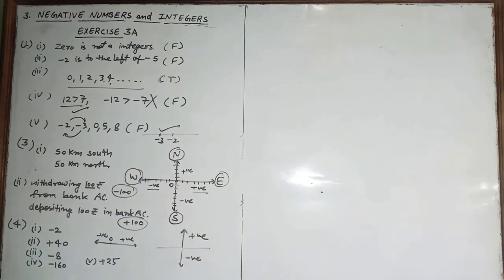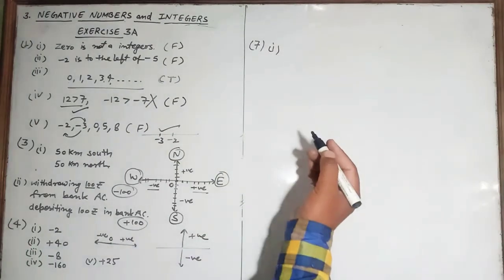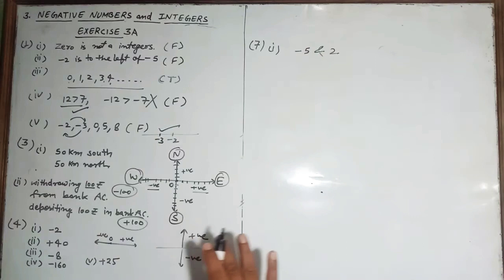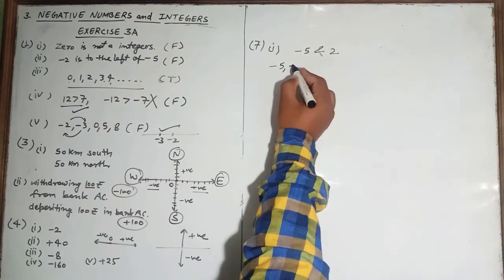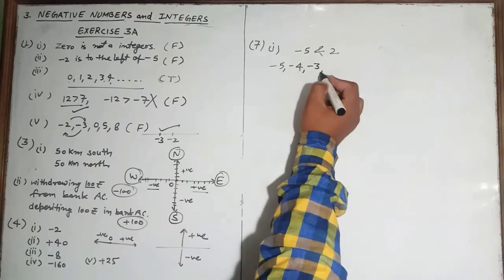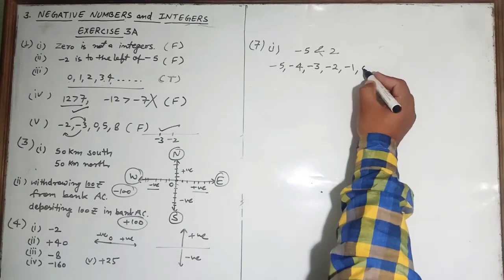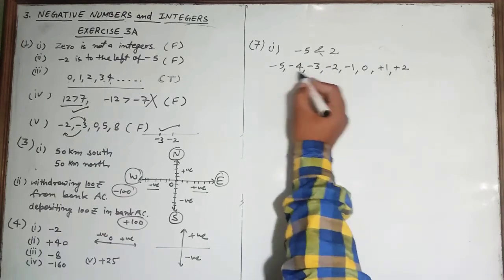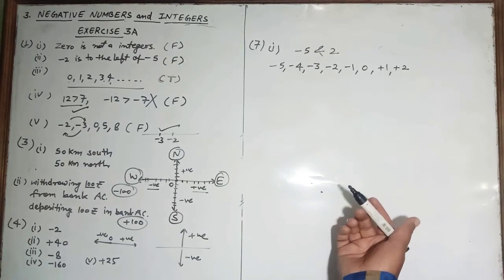Question number six: mark the following integers on number lines — you can do that with the help of the first part of this video. Question number seven: write all the integers between given values. First part: write all integers between minus five and two.